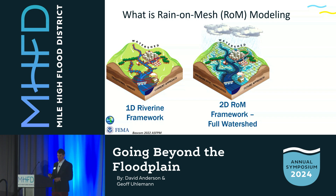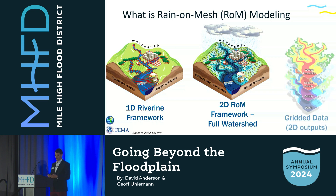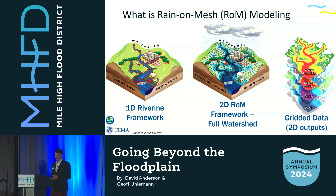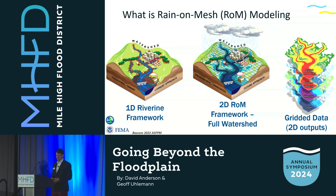This gives us a gridded output for a wide variety of events. We can get the annual percentage chance of flooding — shown with red being the two-year all the way up to the thousand-year storm. It can give us velocity times depth, velocity isolated, or depth isolated across a wider variety of events.